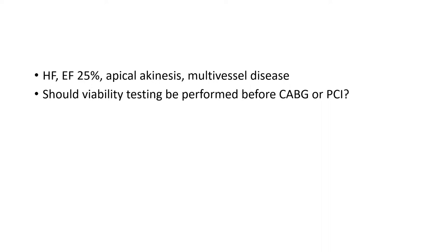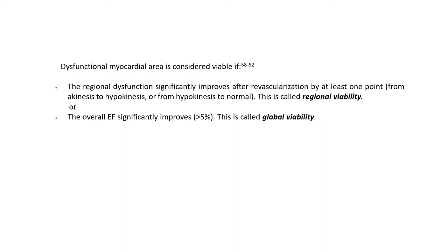I am going to dissect that question via multiple case scenarios, starting by explaining some of the theory behind it. There are two definitions for viability. The first is regional viability, defined as regional dysfunction improvement after revascularization by at least one point — from akinesis to hypokinesis, or from hypokinesis to normal.